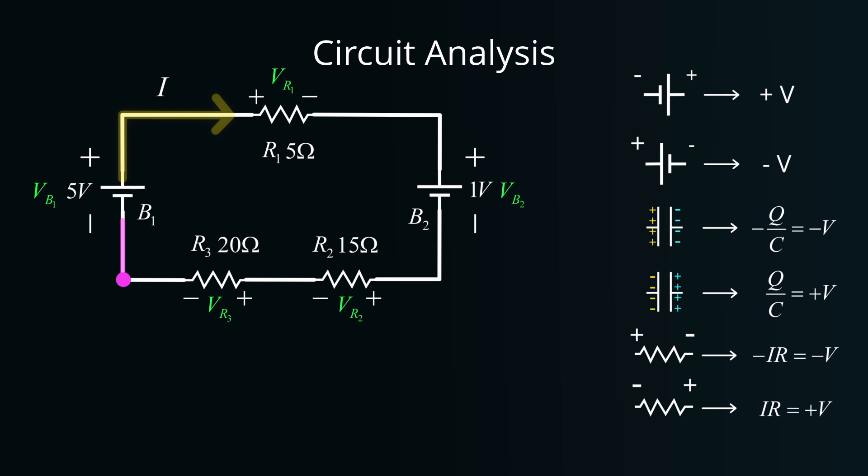The first component in our path is battery B1. Adhering to our earlier established convention, we enter through its negative terminal and exit via the positive. Consequently, this interaction contributes a plus VB1 to our equation. Next, the component we encounter is the first resistor, R1. With the direction of current flow matching our analysis direction, and considering our convention, the voltage drop across this resistor will be negative. Given Ohm's law, V equals IR, we'll denote the voltage drop across R1 as minus I multiplied by R1.